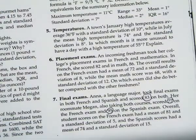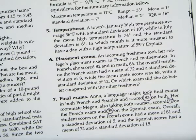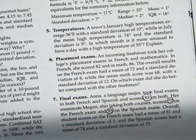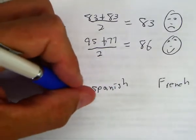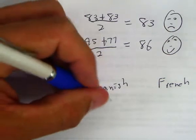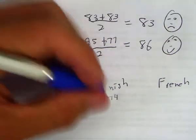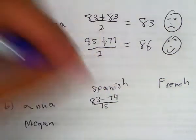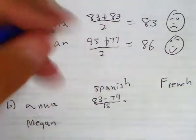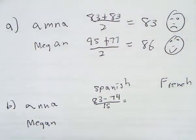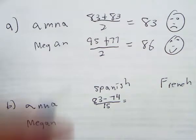So Anna got an 83, and the Spanish had a mean of 74 and a standard deviation of 15. So we're going to do 83 minus 74 over 15. So if we do that, we wind up with a Z-score of 0.6.